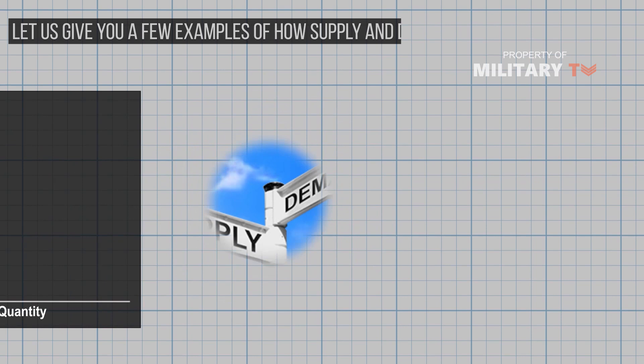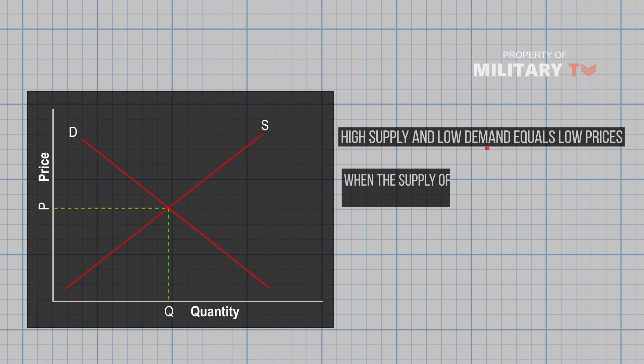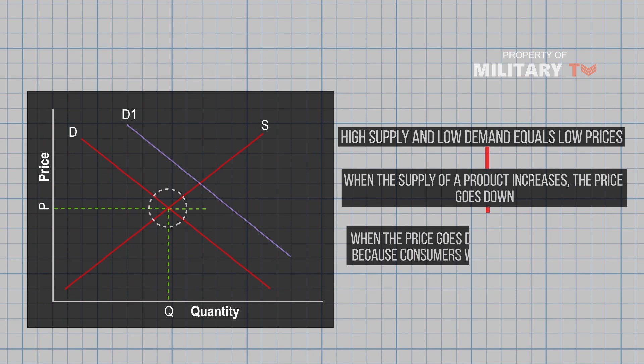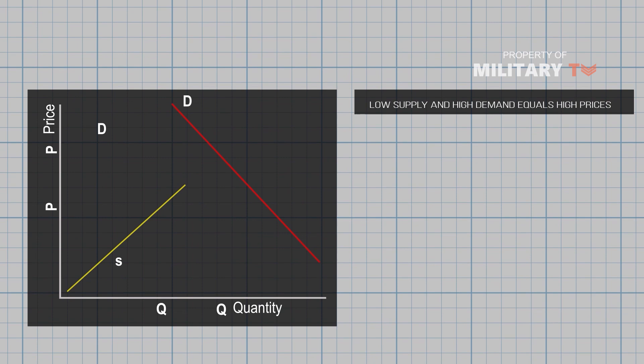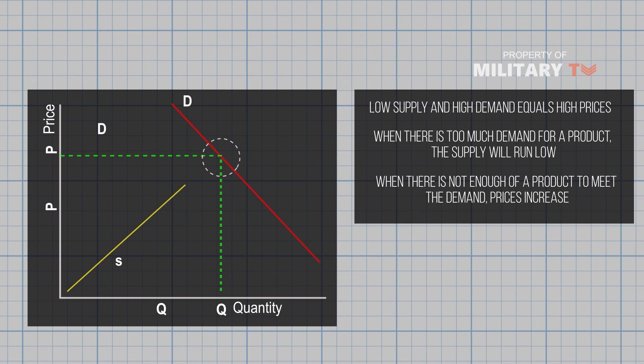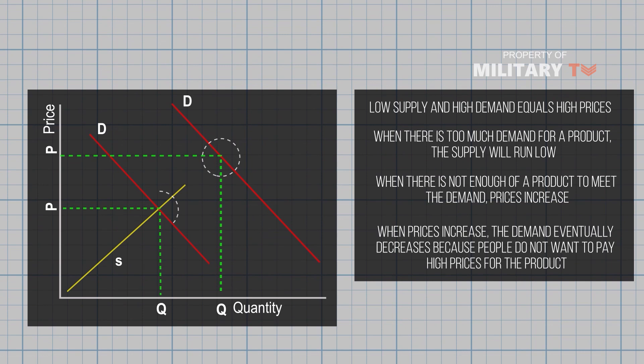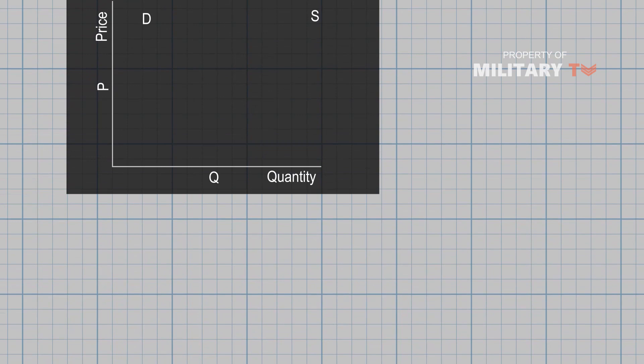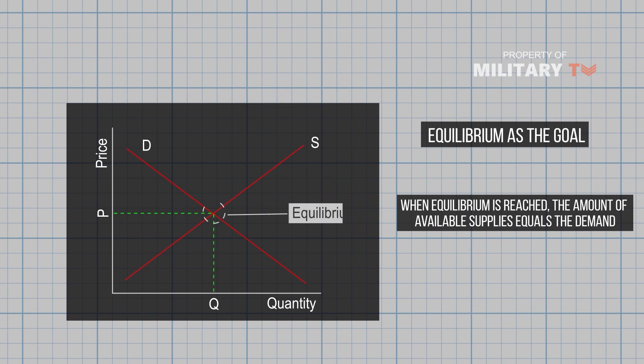Here are a few examples of how supply and demand work. High supply and low demand equals low prices: when the supply of a product increases, the price goes down, and when the price goes down, demand goes up because consumers want to pay a lower price. Low supply and high demand equals high prices: when there is too much demand for a product, the supply will run low, prices increase, and demand eventually decreases because people do not want to pay high prices. Prices will fall once demand goes down. When equilibrium is reached, the amount of available supply equals the demand.